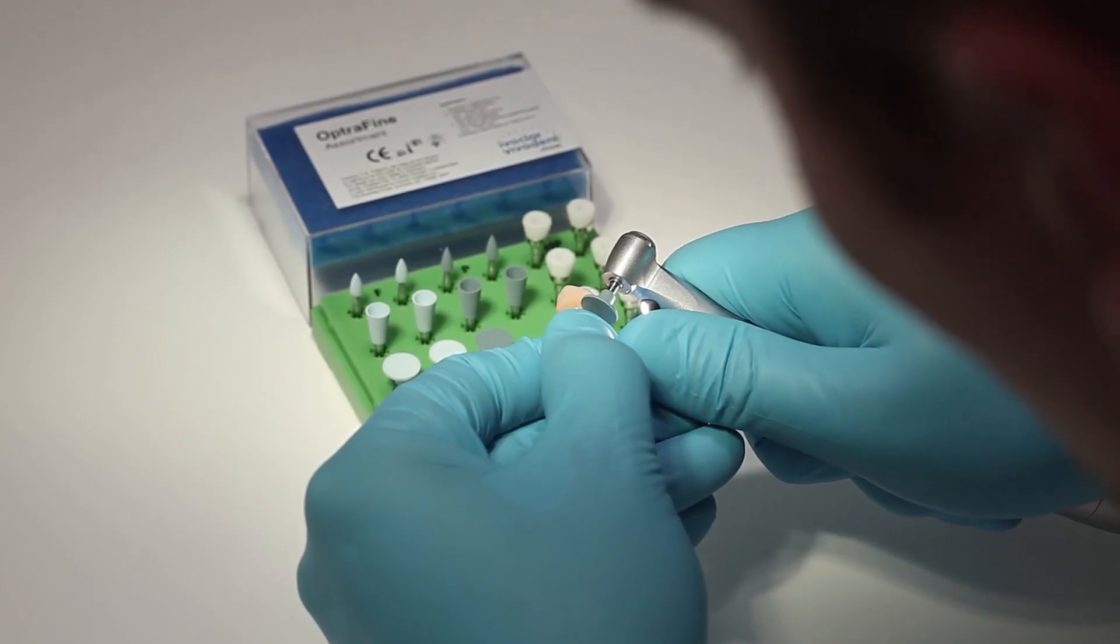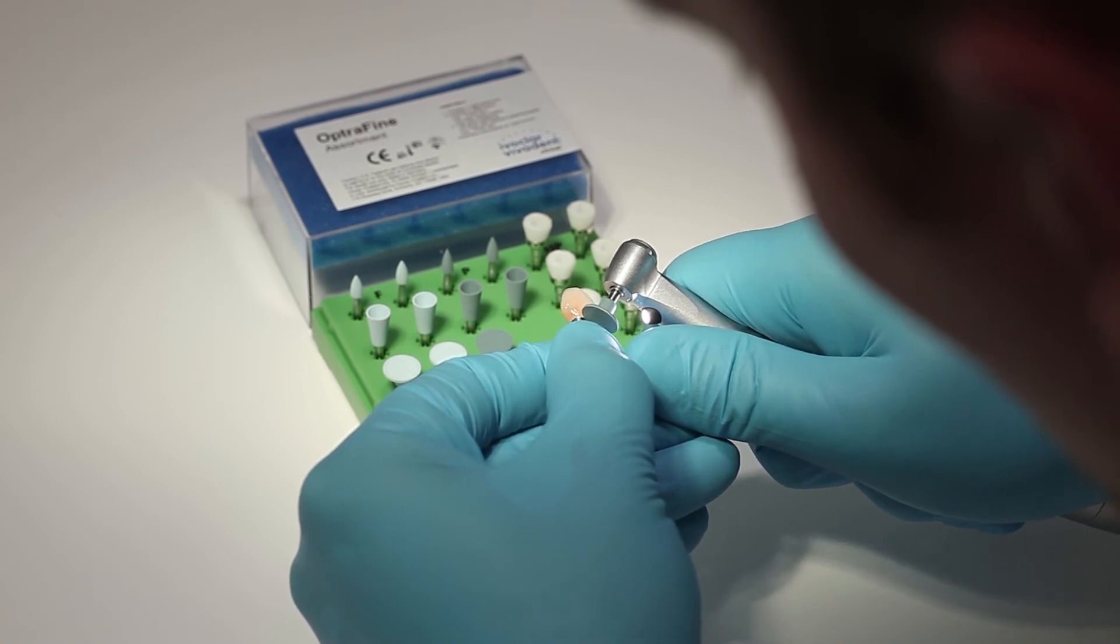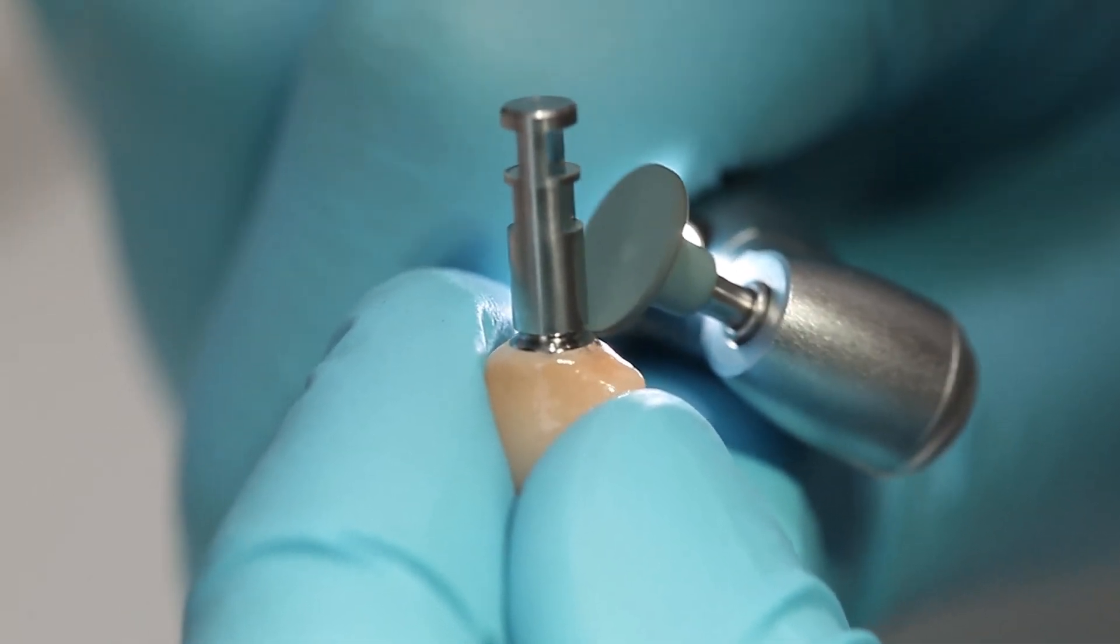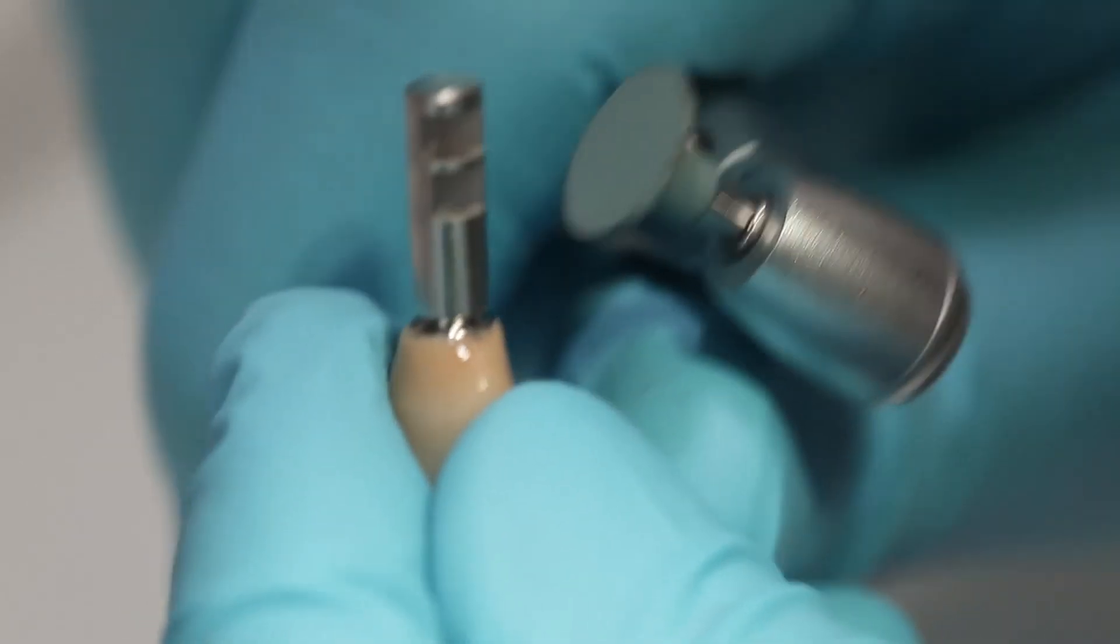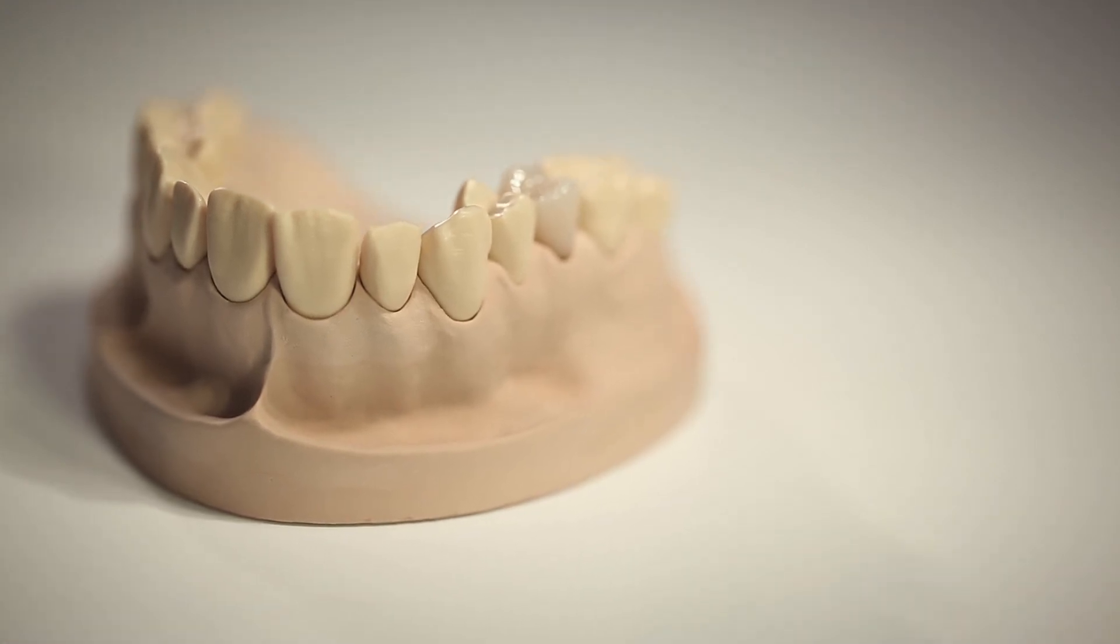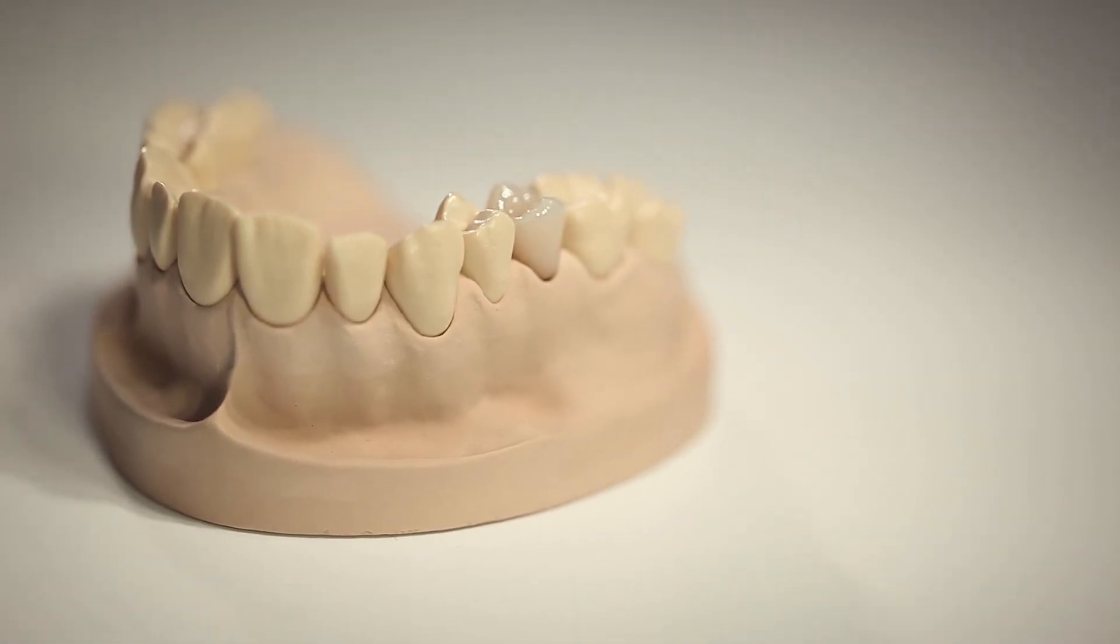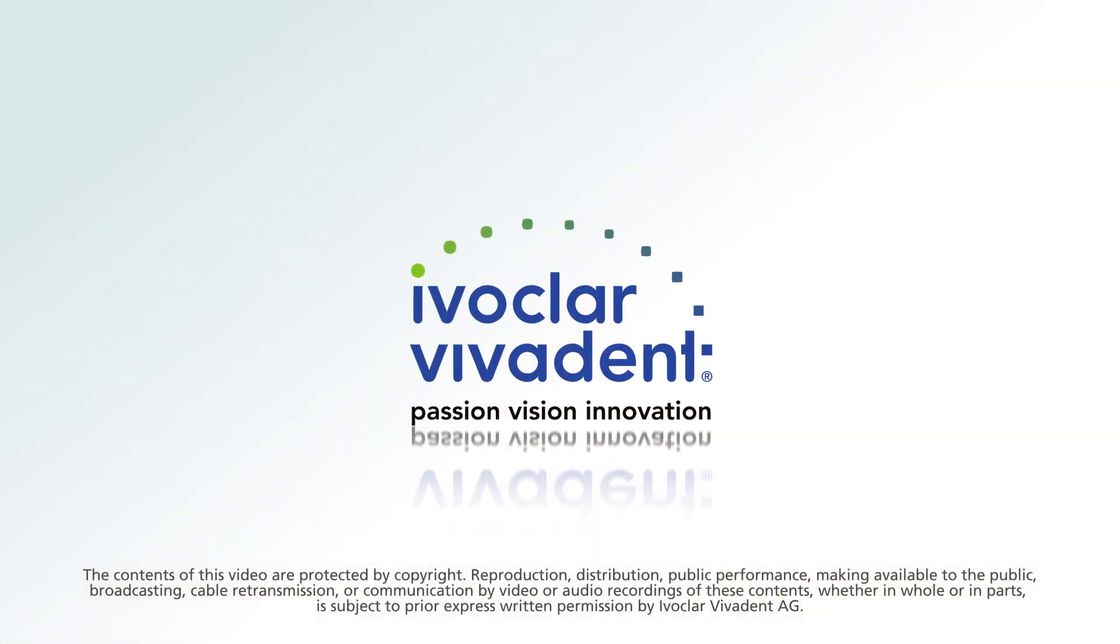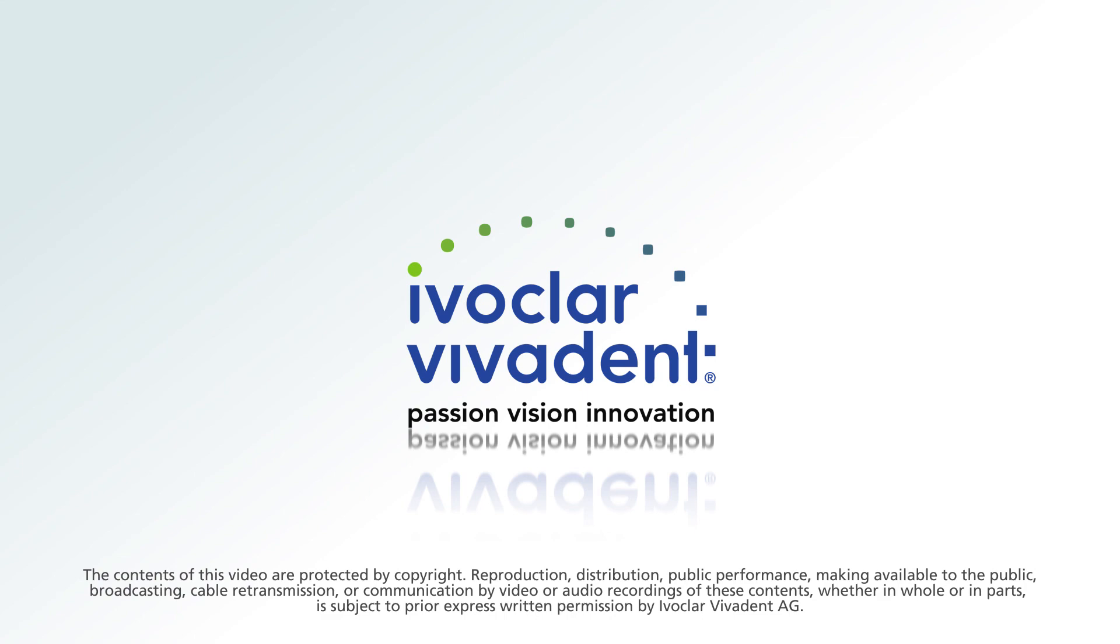Carefully polish the cement joint using rubber polishers, for instance Optrafine, at a low speed of no more than 5000 revolutions per minute to prevent overheating.